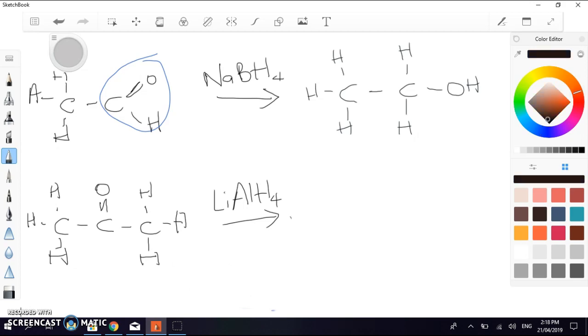On the second molecule down, which is a ketone, you can tell it's a ketone because it has this C double bond O in the middle of the carbon chain. So this is propanone.